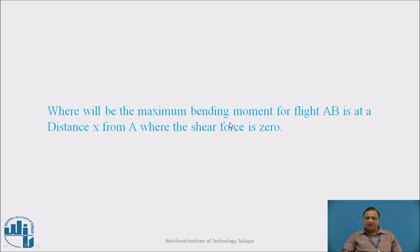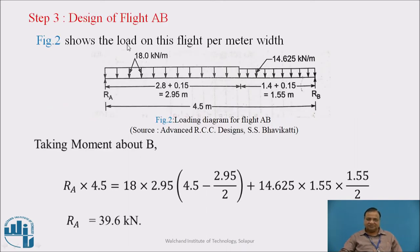Step 3: Design of Flight AB. Maximum bending moment for flight AB is at distance x from A where the shear force is zero. We get maximum bending moment where shear force is zero. Therefore we write an equation for shear force and equate it to zero to find x. Figure 2 shows the load on this particular flight per meter width. This is flight AB with RA and RB. This portion is steps with more weight, and this is landing portion with less load. RA is calculated by taking moment about one of the supports, which is 39.6 kilonewton.